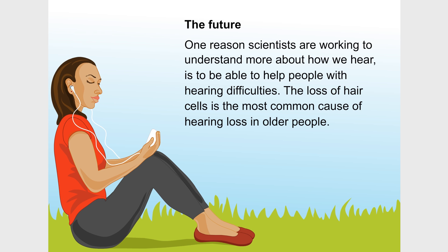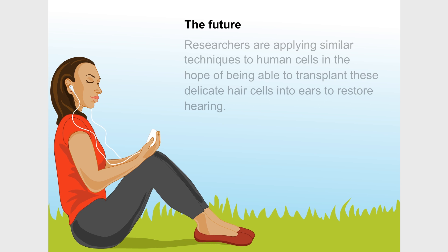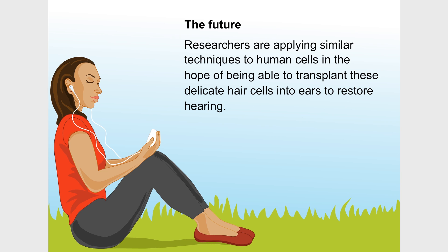One reason scientists are working to understand more about how we hear is to be able to help people with hearing difficulties. The loss of hair cells is the most common cause of hearing loss in older people. Scientists at Stanford University School of Medicine have successfully used mouse embryonic stem cells to create cells that display many of the properties of delicate inner hair cells. Researchers are applying similar techniques to human cells in the hope of being able to transplant these delicate hair cells into ears to restore hearing.